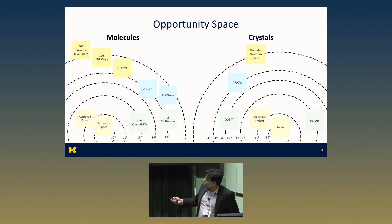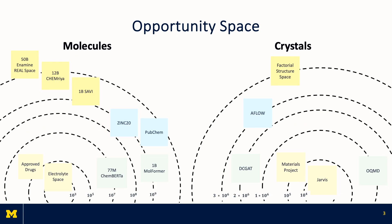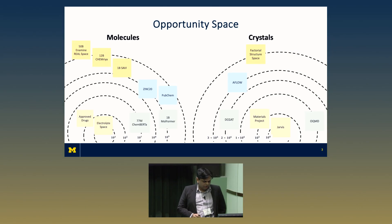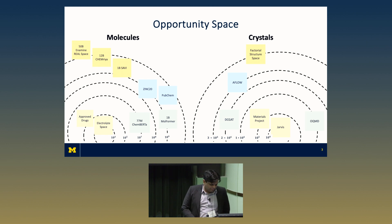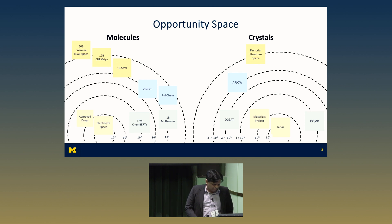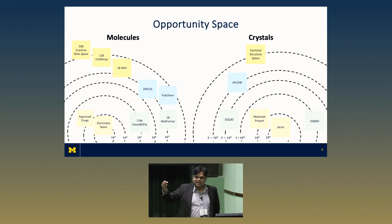I'm going to walk you through the journey of scaling up these large language-like models — it's a different flavor, more along the lines of what Arvind talked about. The largest that has been trained so far is by Pyle, who will speak tomorrow, called Molformer. At the billion scale, it's already looking very promising. But there's still a gap between a billion and the known easily synthetically accessible space, and I think there may be more.